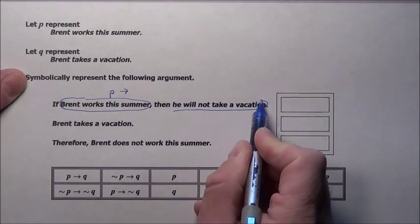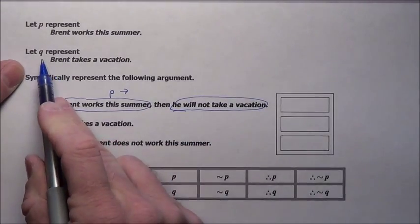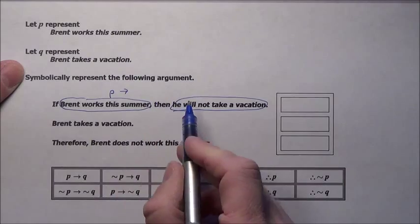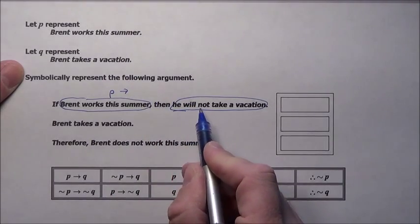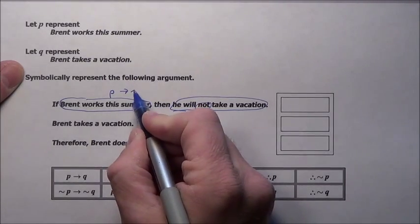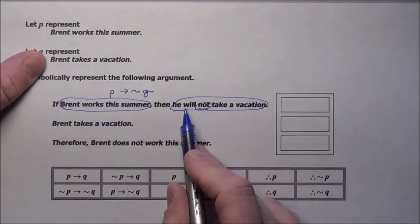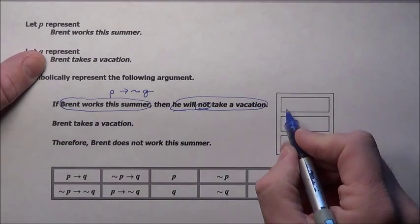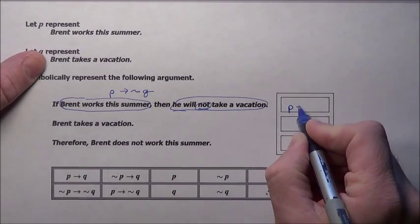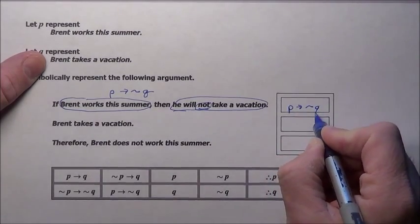This part, 'he will not take a vacation.' Q represents Brent takes a vacation. So we've got to negate it because we want him not to take a vacation. So we say not Q because Q is representing Brent taking a vacation. And we want to say he will not take one. So this first thing is going to be P implies not Q.